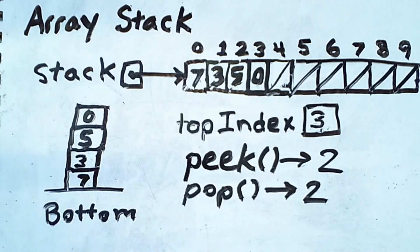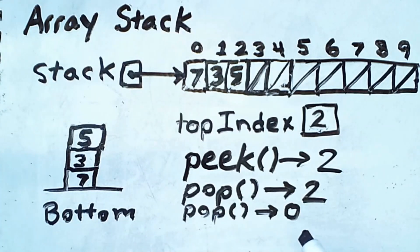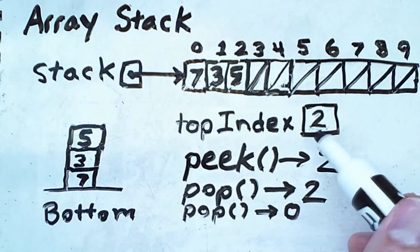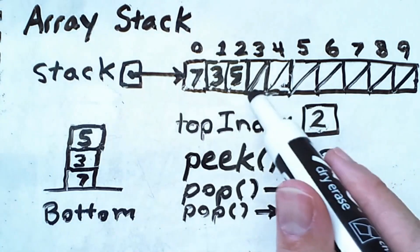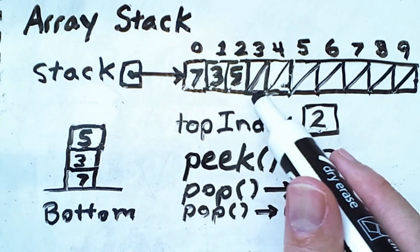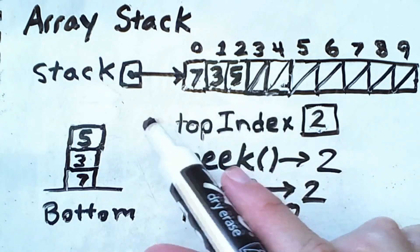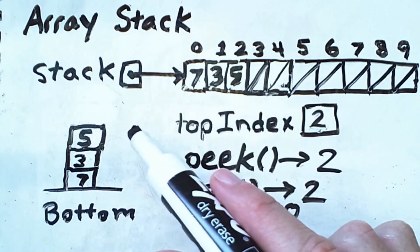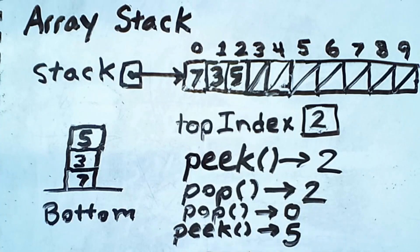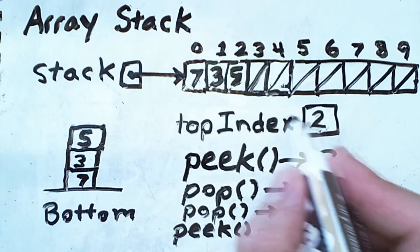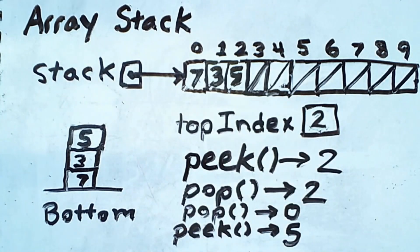Additional pops and peeks would lead to the following results. Calling pop again would return 0 and leave our top index at 2, removing the 0 from the array. A call to peek at this point would return 5, which is at index 2 in the array, but would not otherwise change the data structure.